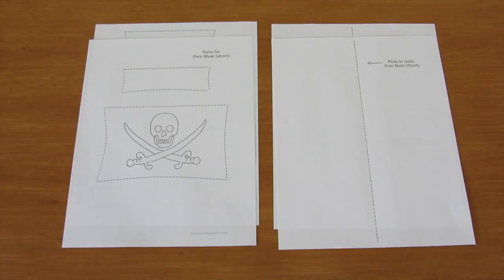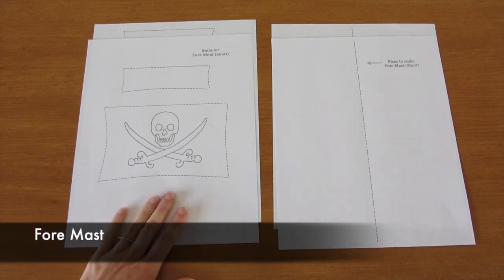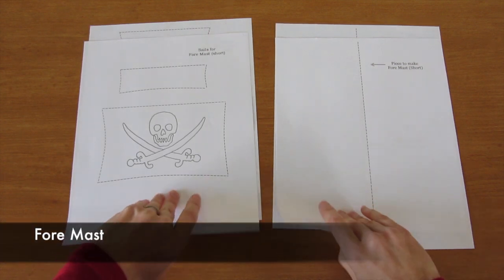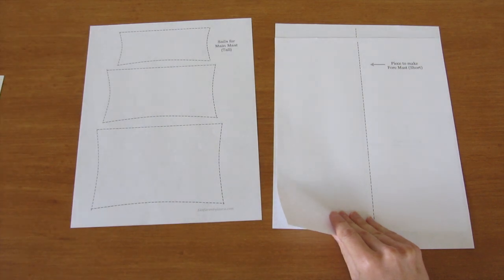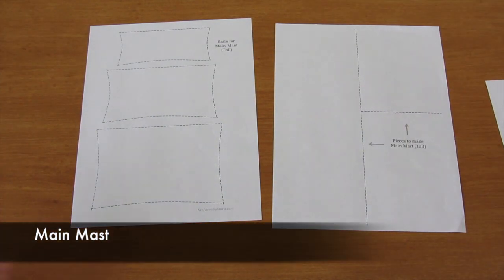First, I'm going to show you how to make the mast and the sails. I printed the templates for these on regular white paper, but feel free to use colored paper. The shorter mast in the front of the ship is called the foremast. It will have two sails. The taller mast in the back half of the ship is called the mainmast. Ours will have three sails.